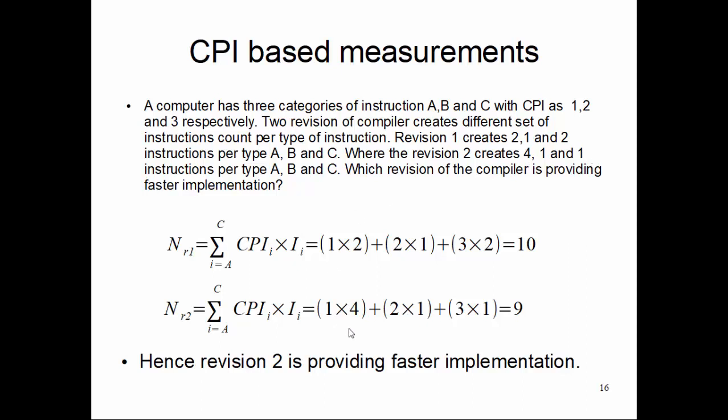We'll look at the CPI and number of instructions for each group. From group A to C, we multiply: CPI of 1 for group A multiplied by 2 for compiler revision 1, then CPI of 2 multiplied by 1, and CPI of 3 multiplied by 2. We sum it up and it becomes 10.